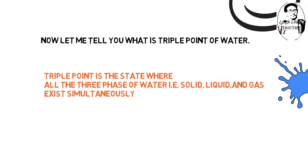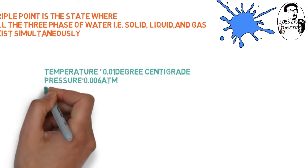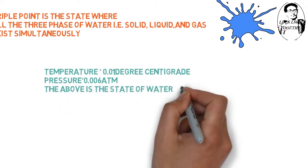For water, triple point is equal to temperature is 0.01 degree centigrade, pressure is 0.006 atmosphere.